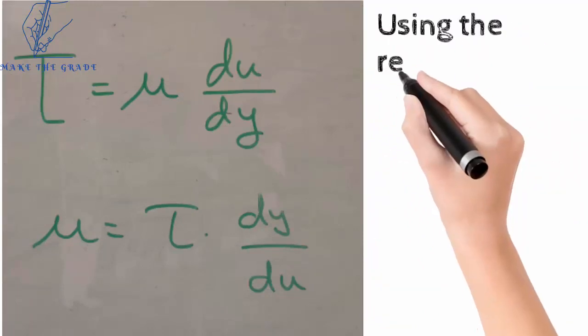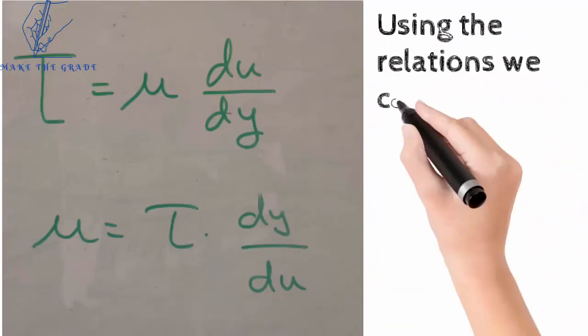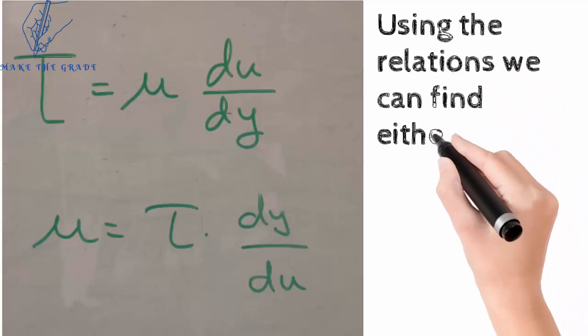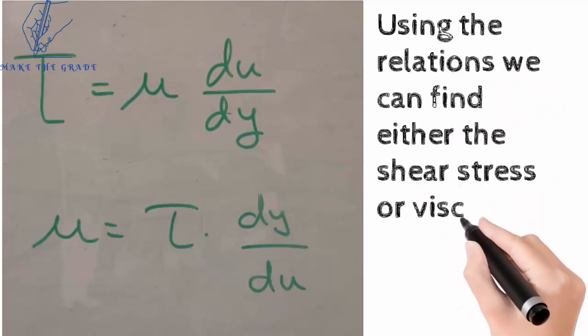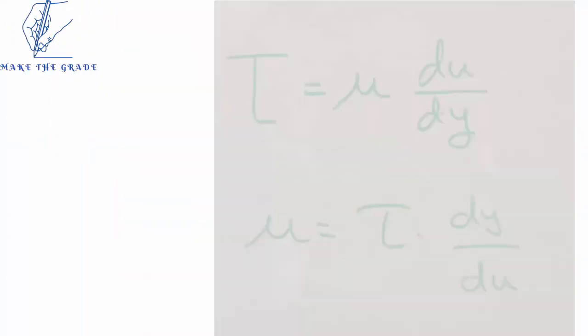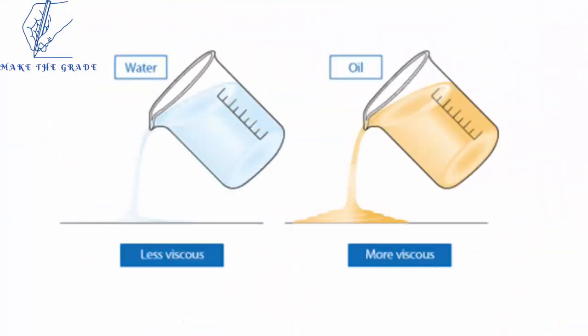Or rearranging it as μ = τ(dy/du), we can either find the shear stress offered by the viscous fluid or the viscosity of the fluid by knowing the shear stress offered.